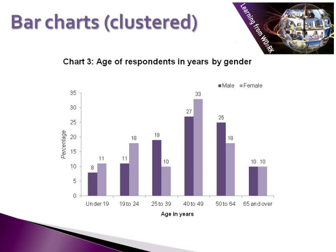So we can see that for our under-19s and 19s to 24, we have more females as a proportion within this age group compared to males, and so on and so forth. It's also useful to remember that with both single and clustered bar charts, bars can also be represented not just vertically but also horizontally as well. You do sometimes see bar charts represented horizontally and not just vertically as shown in these examples.